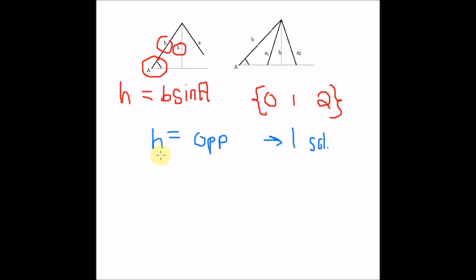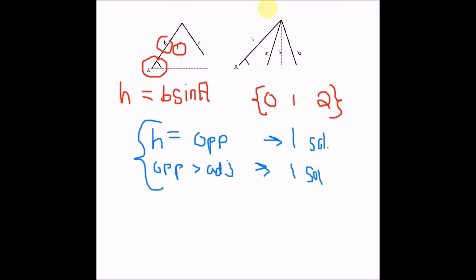This also applies if the opposite side is larger than the adjacent side — we would also have one solution total. On the other hand, if the height is greater than the opposite side, then no triangle is possible and there are zero solutions with the given information.